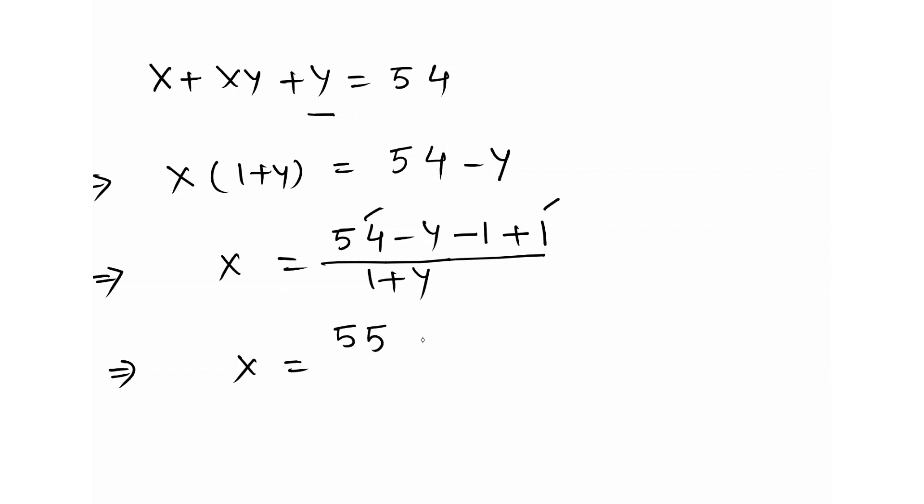And we take minus common from the middle two terms and that becomes -(y + 1). Now we divide 1 + y to both terms separately, this gives x = 55/(1 + y). 1 + y and y + 1 being equal cancels out each other and what remains is -1.